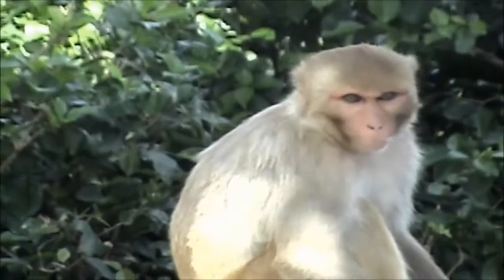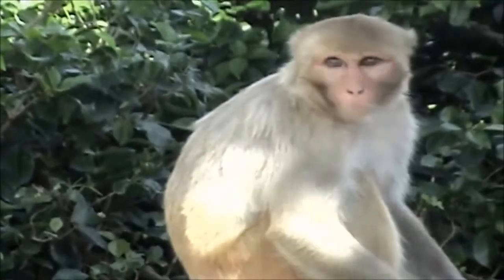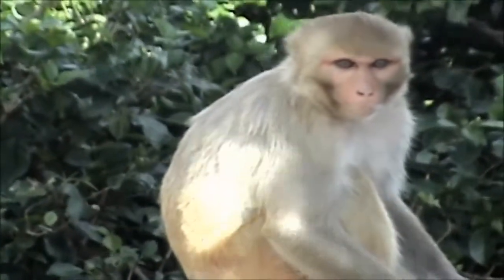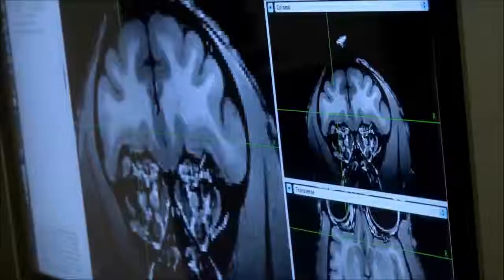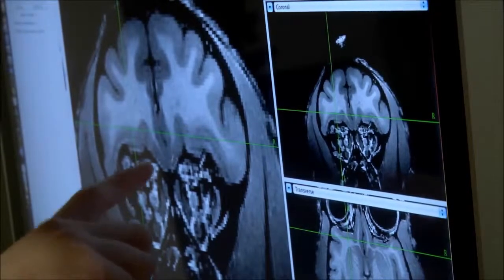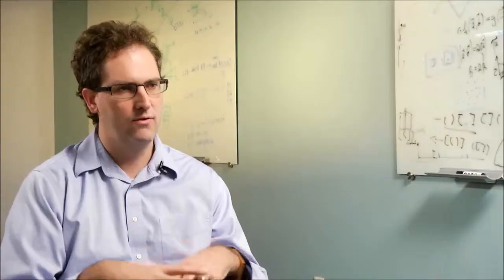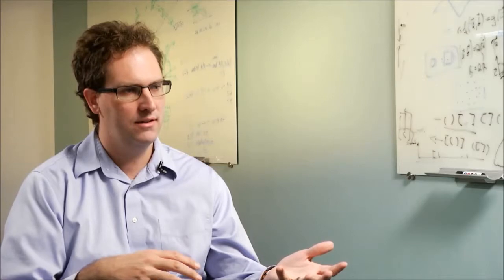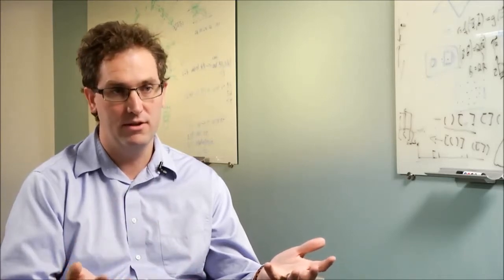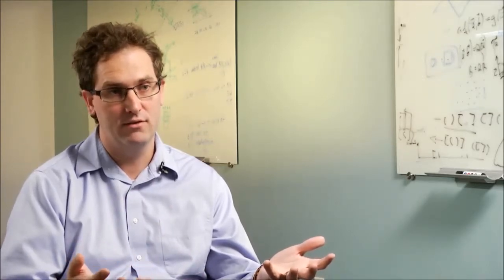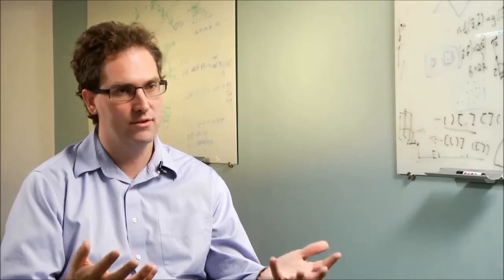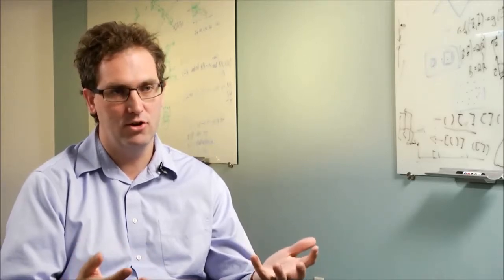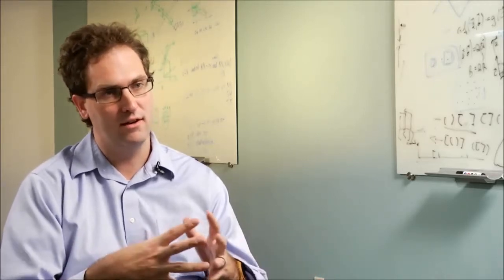We had this estimate of the subjective value that the monkey placed on information, and so what we could do with that is look at how neurons responded and see if they signaled that exact value. We're going to look for the value of the juice that's available to the monkey on the task, and we're going to look at the value of the information. That's the curiosity itself. And we're going to see both of these signals present simultaneously in the activity of the neurons, but not yet integrated into a single whole.